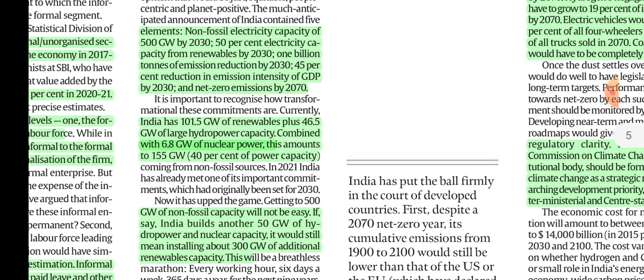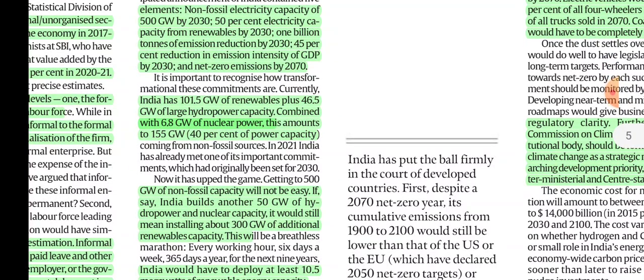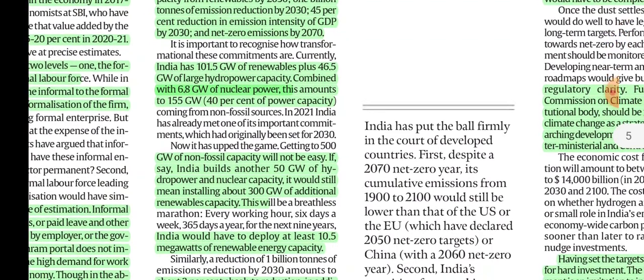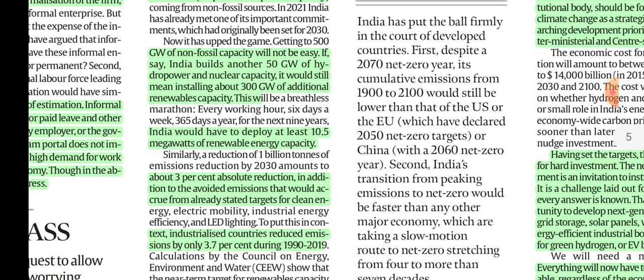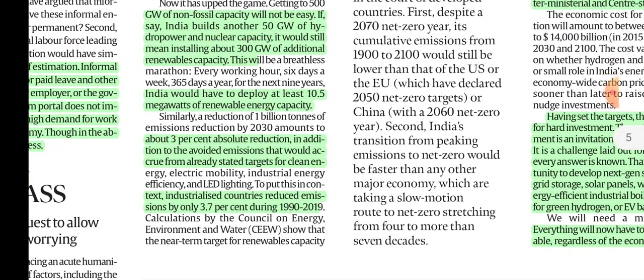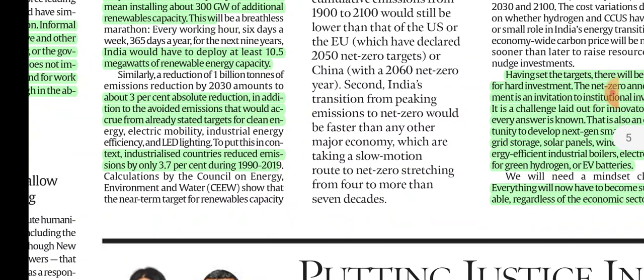India's climate targets — we currently have 155 Gigawatt installed and need to reach 500 Gigawatt, which means deploying 10.5 Megawatt of renewable energy capacity daily. Reaching 500 Gigawatt of non-fossil fuel capacity will not be easy. India has also committed to a 1 billion tonne emission reduction by 2030, which is a 3% absolute reduction. Comparing with developed countries, in 30 years from 1990-2019 they achieved only 3.7% reduction, whereas India commits to 3% reduction in 10 years despite having no comparable technology advantage.